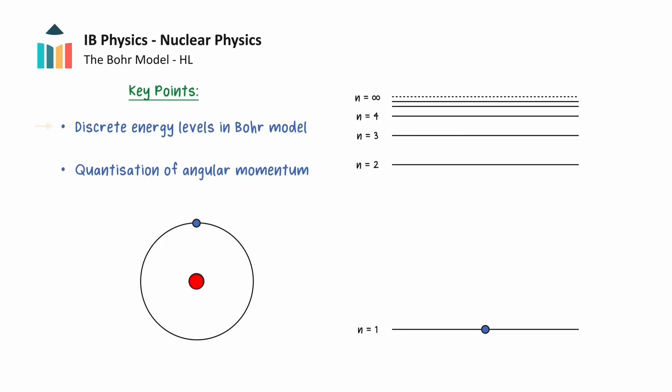In this video we will take a deeper look at the discrete energy levels in the Bohr model of hydrogen, and we will see how angular momentum is quantized in this model.